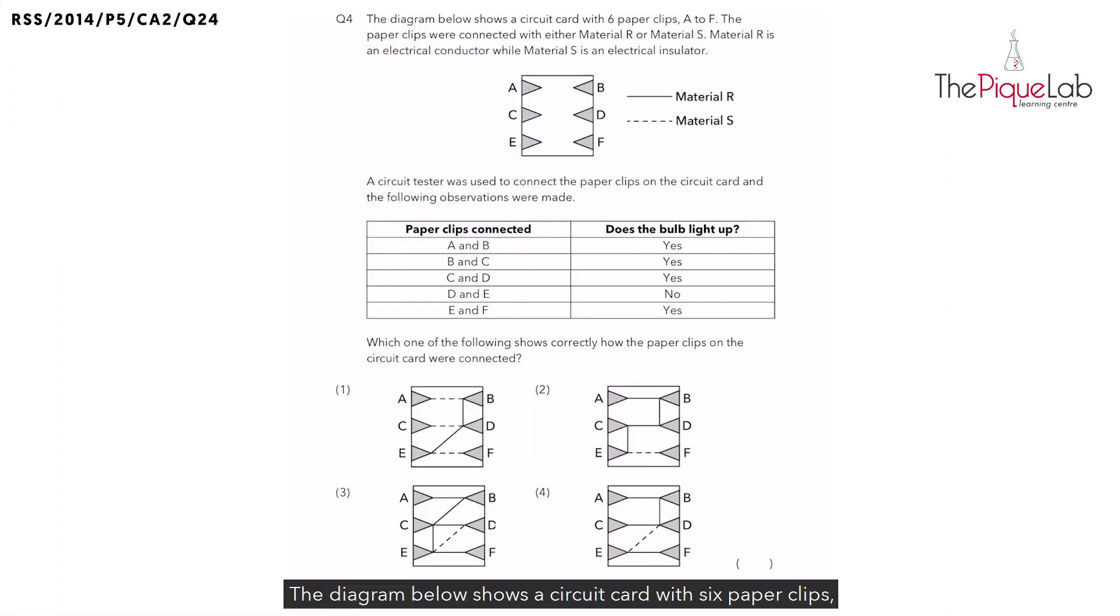The diagram below shows a circuit card with six paperclips A to F and these paperclips are connected with either material R or S. R is an electrical conductor while S is an electrical insulator.